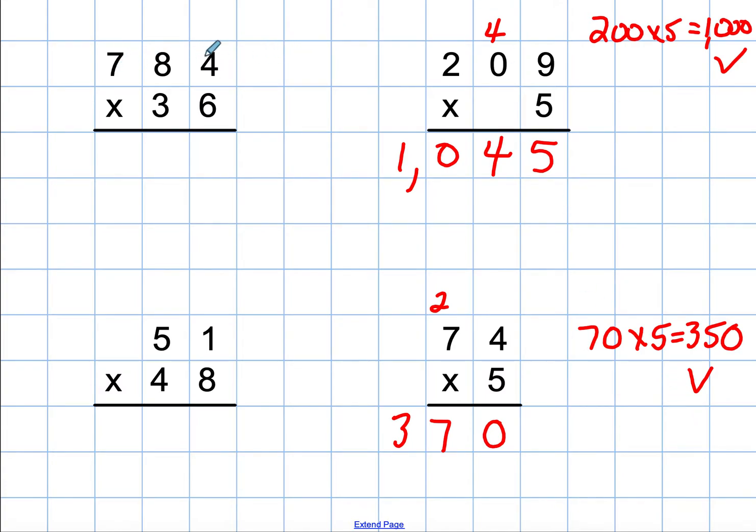Now let's take a look at a 3-digit times a 2-digit number and a 2-digit times a 2-digit number. The first difference is going to be in the estimate. I'm going to round both of them. So 784 will round to 800, and 36 will round to 40. 8 times 2 is 32, and then I have my 3 zeros. So I'm expecting the answer to be about 32,000.